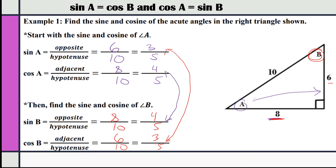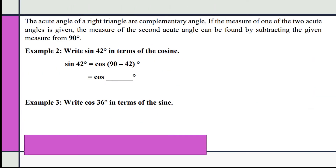The acute angles of a right triangle are complementary, meaning they equal 90 degrees. There are 180 degrees in a triangle, and since the right angle is 90, the two other acute angles combined must equal 90. So if the measure of one acute angle is given, the second can be found by subtracting the given measure from 90.